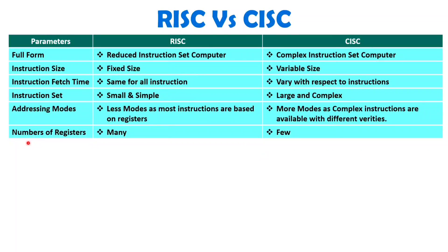When we talk about number of registers, RISC will have many registers inside the CPU, while CISC will have fewer registers. The reason is RISC architecture is based on register-only execution. CISC architecture is based on the complexity of instructions — you don't need many registers because you operate with memory, where you can store data and operate along with instructions. With RISC, almost all operations are performed with respect to registers, so you need many registers.